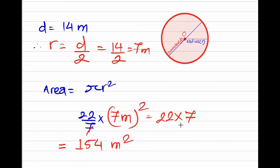That's 22 times 7, giving us 154 meters squared. In this way, we can calculate the area of a given circle when the diameter or radius is given.